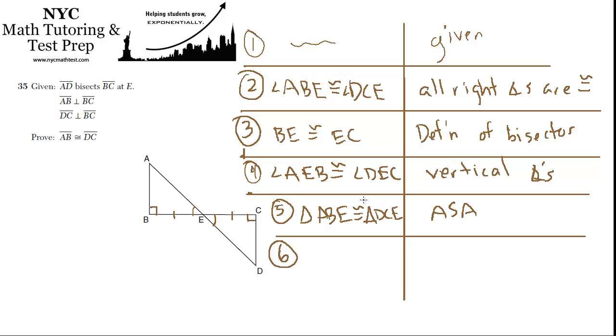And now that we have the triangles congruent, we can say that their parts are congruent. So now we can go right after what we're looking to prove. AB is congruent to DC, which is because corresponding parts of congruent triangles are congruent. CPCTC is the short way of saying that. And that's it.